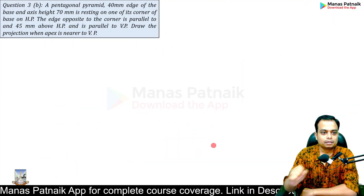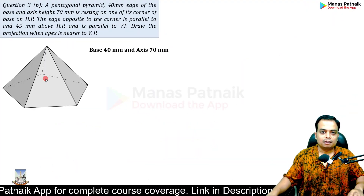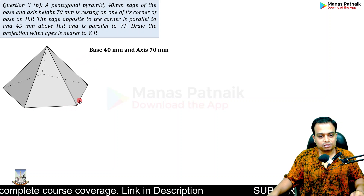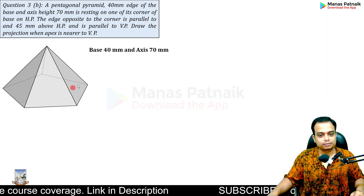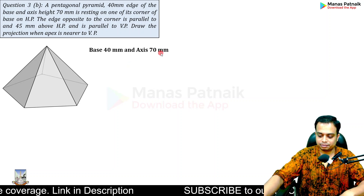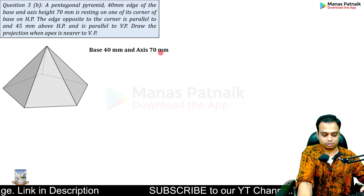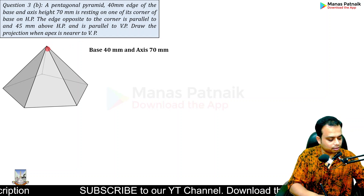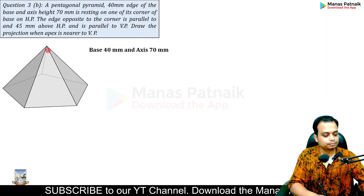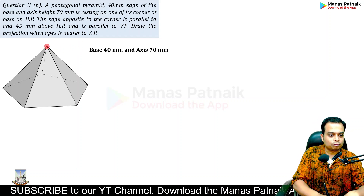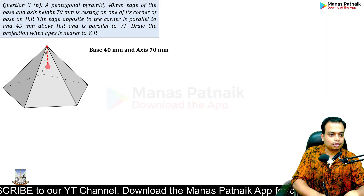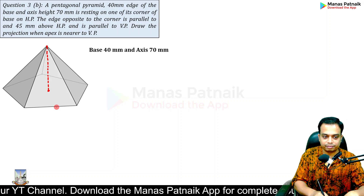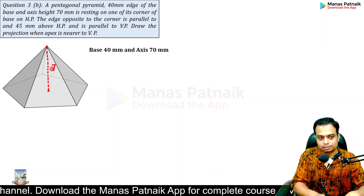The pentagonal pyramid: the base is 40mm, all sides are 40 millimeters each, the height is 70 millimeters. From the apex, the line connecting it with the center is 70 millimeters.